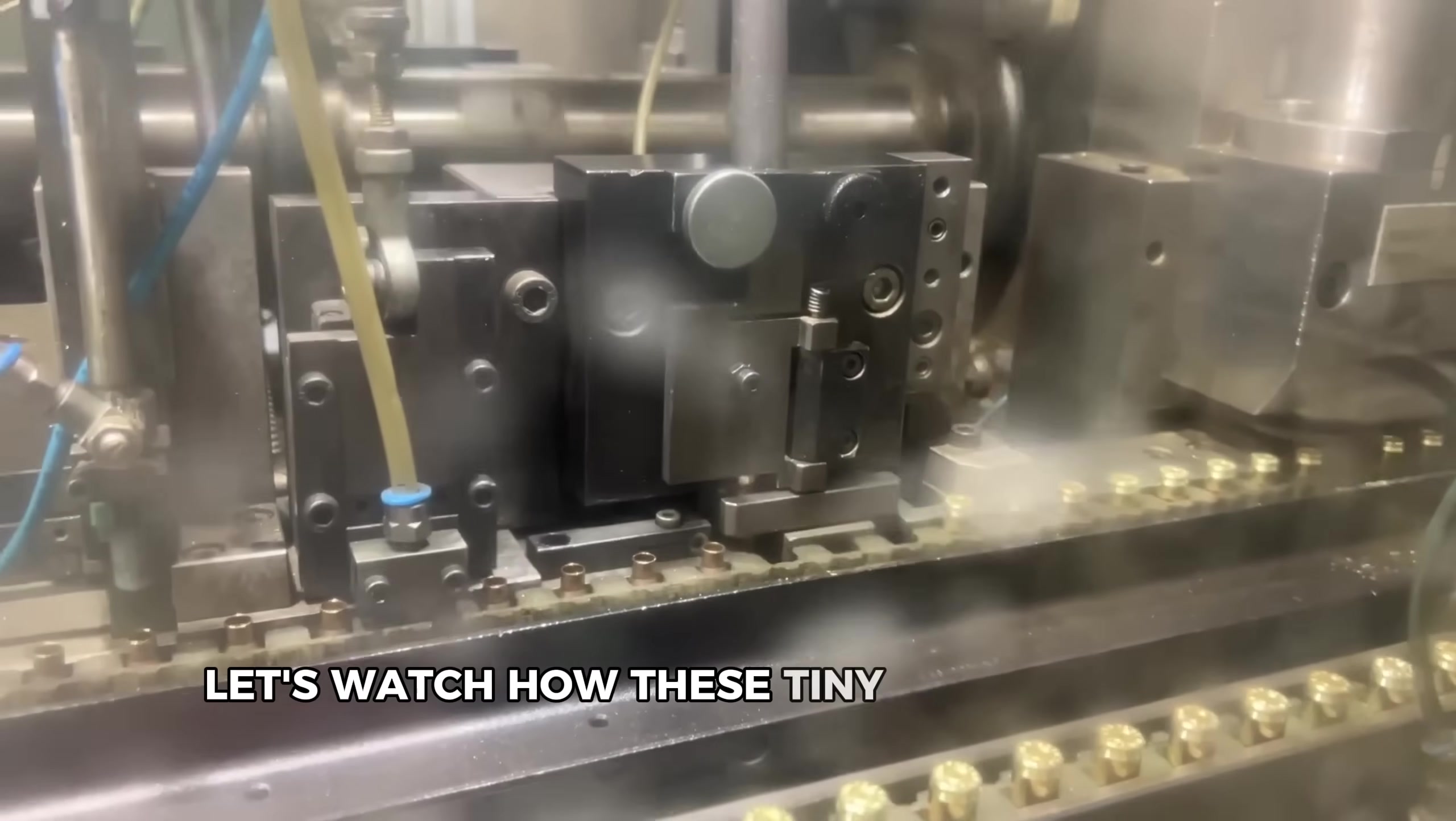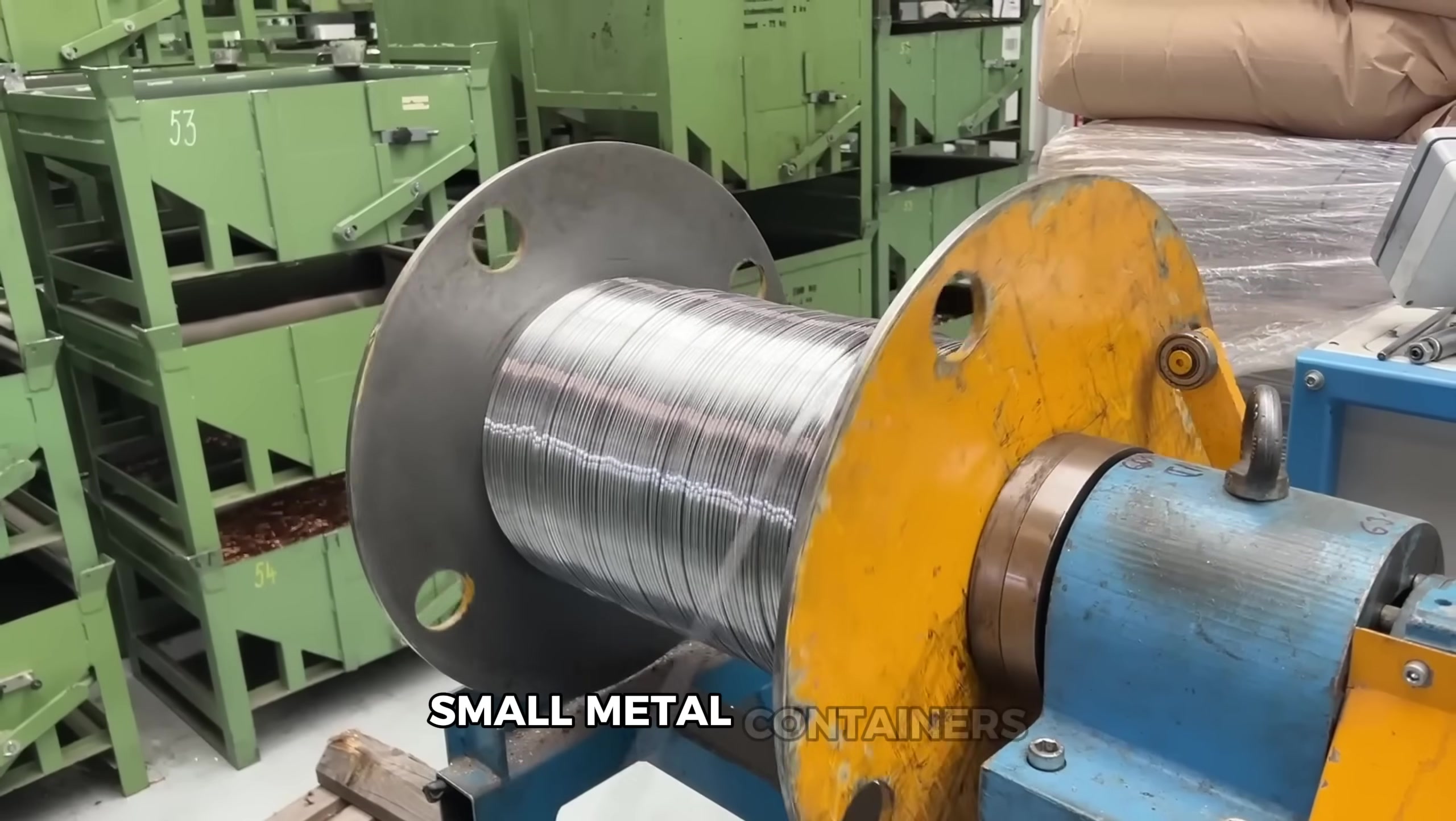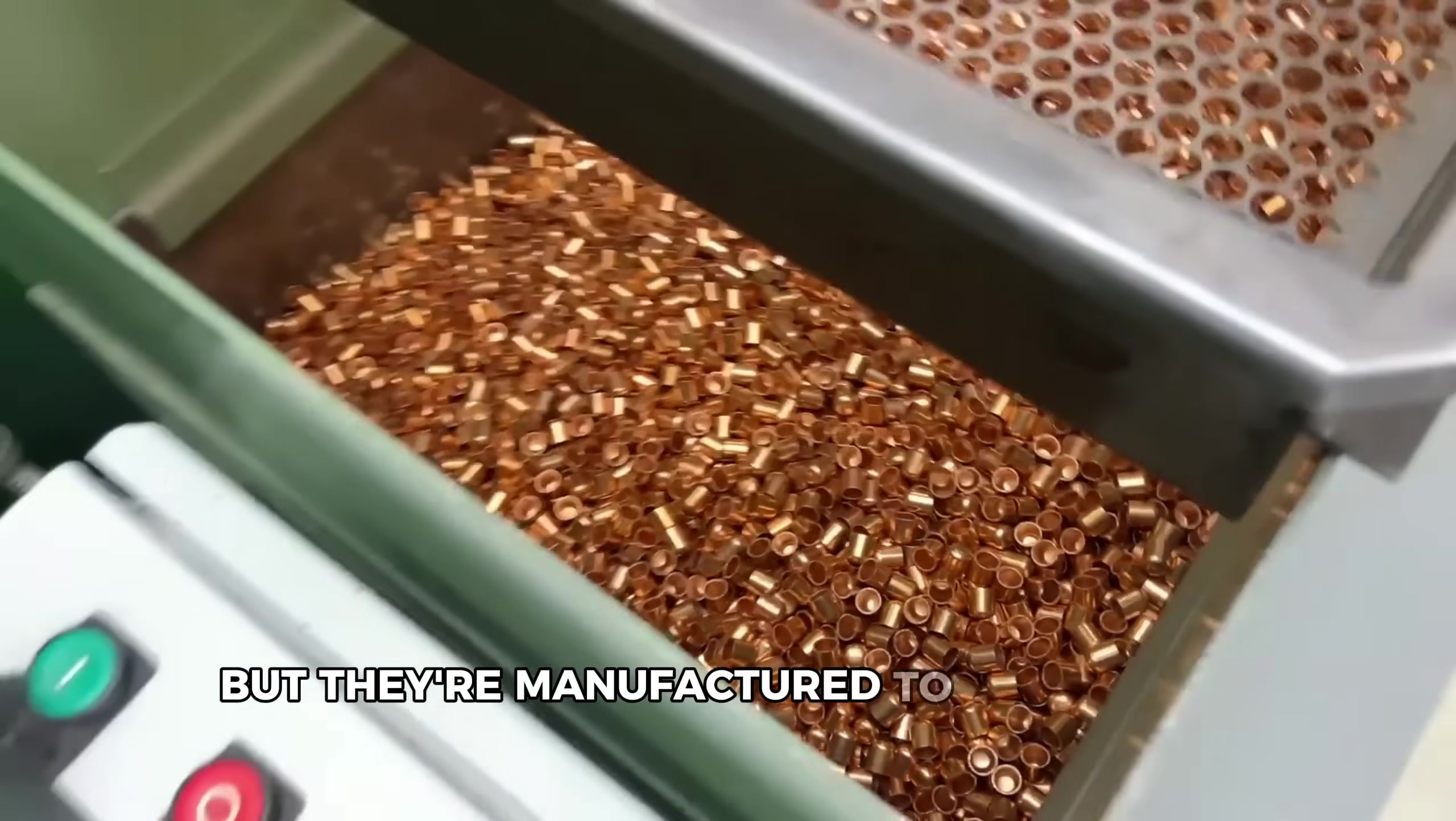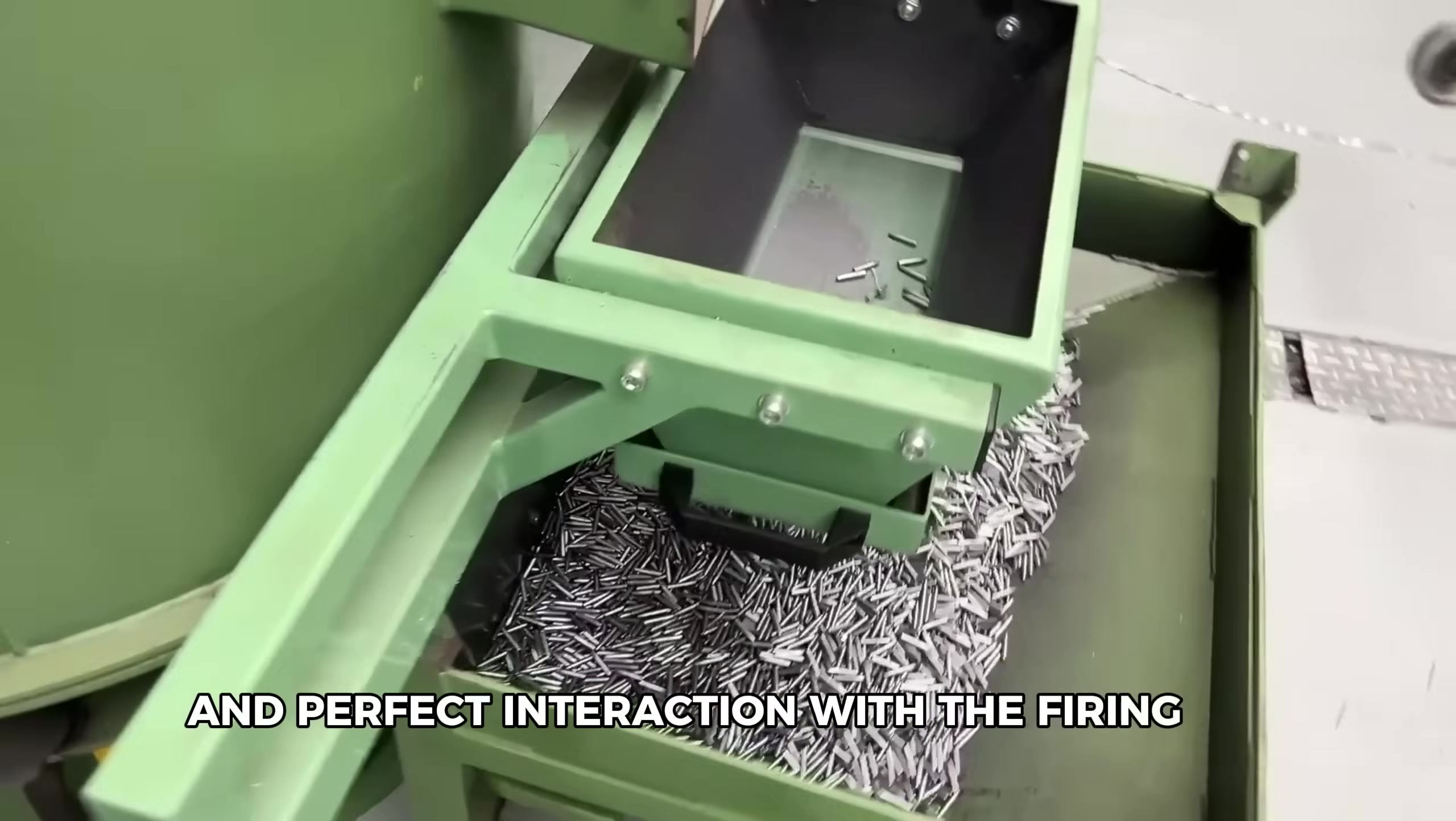Let's watch how these tiny powerhouses come together. The process starts with the creation of primer cups, small metal containers typically made from copper or brass. These cups might look simple, but they're manufactured to incredibly precise dimensions to ensure proper fit in the cartridge case and perfect interaction with the firing pin.